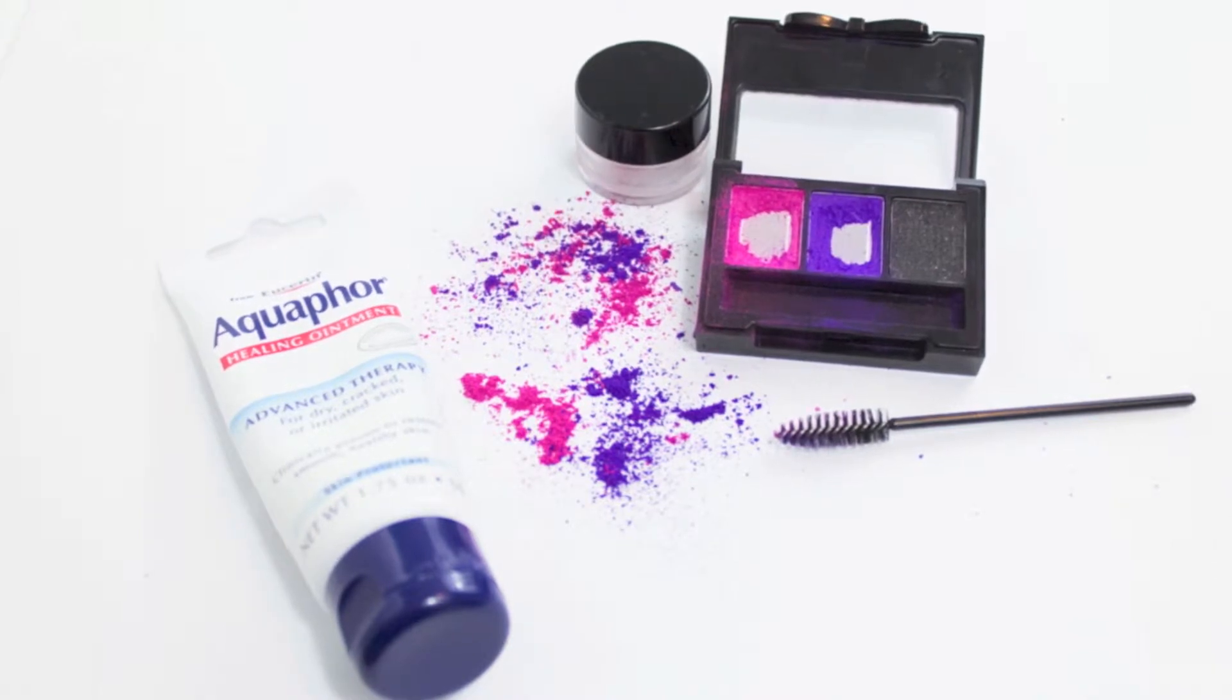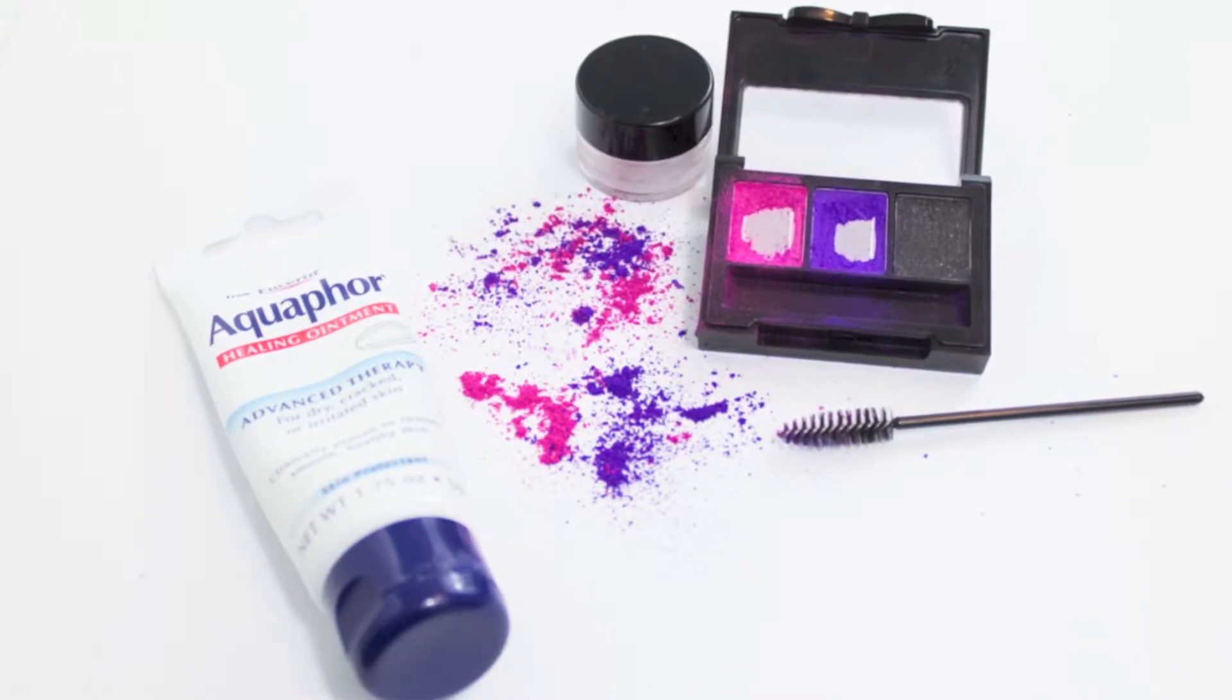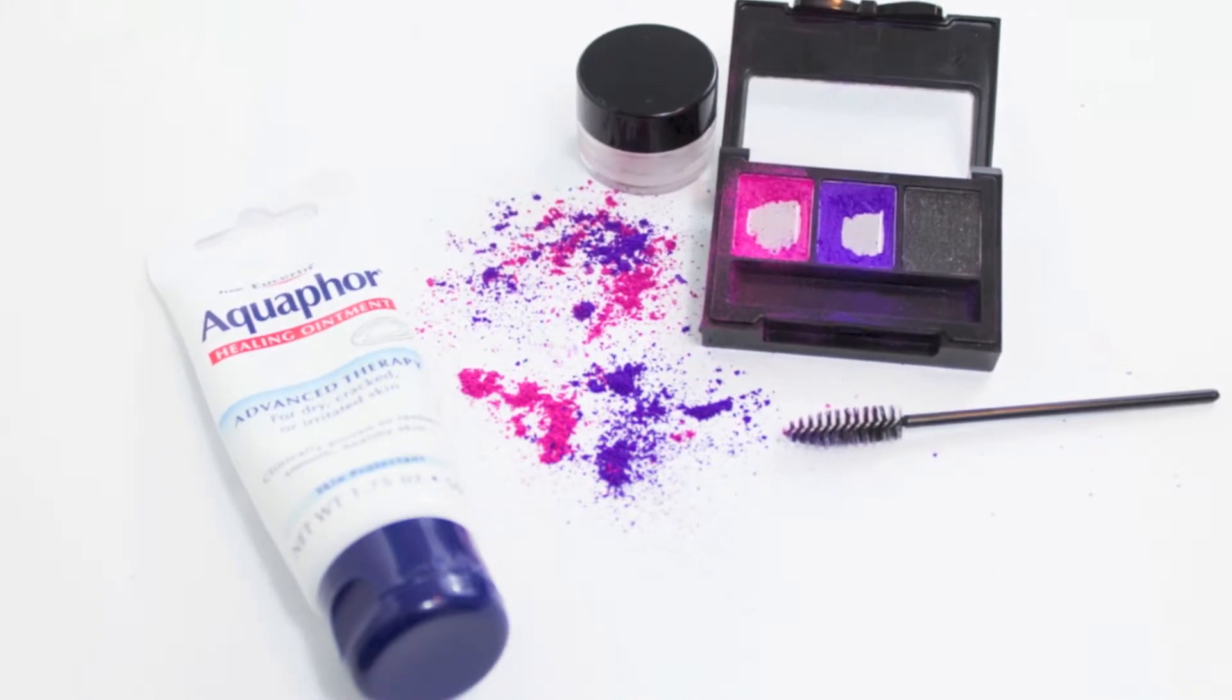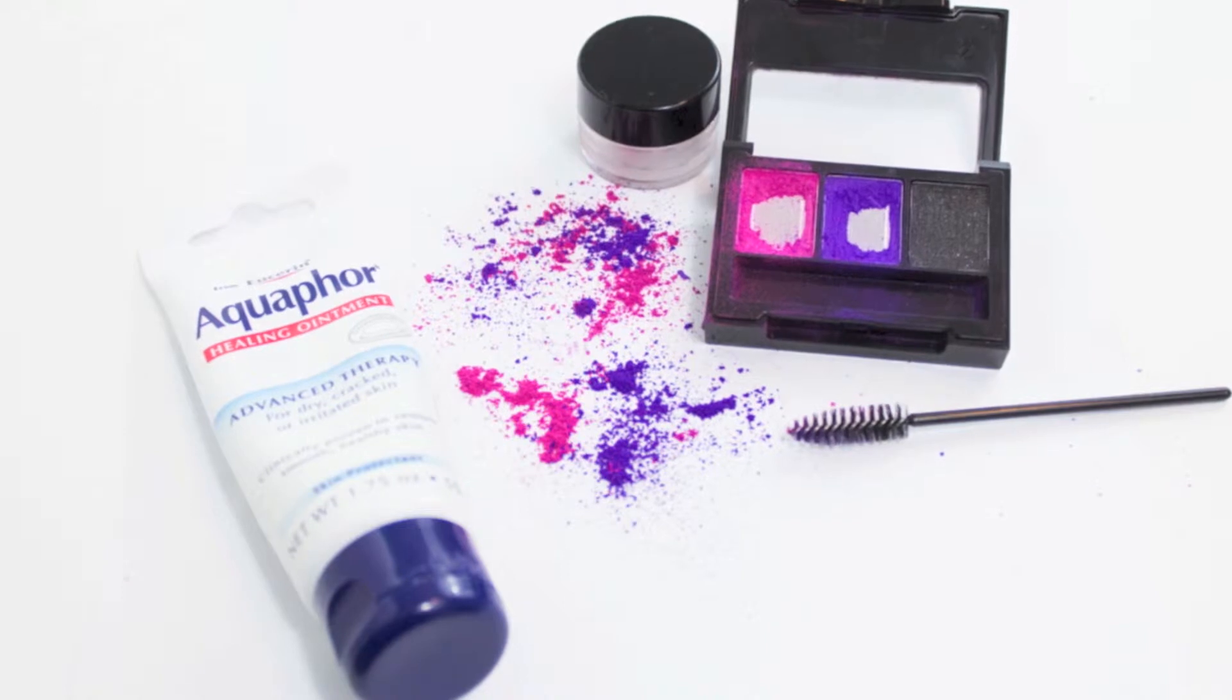You will need petroleum jelly like Aquaphor or Vaseline, the powder product you want to duplicate the color of, an empty container like a clean eye cream jar, and disposable mascara wands.